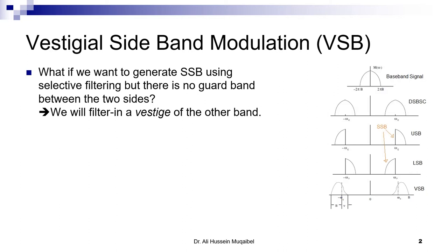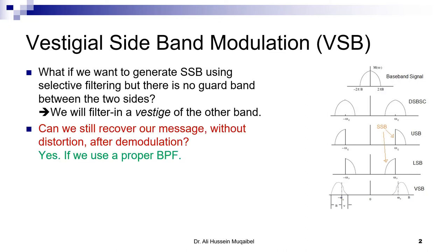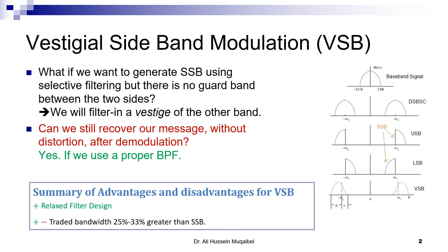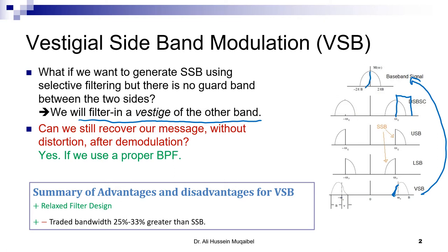Now, what if we want to generate single sideband using selective filtering and we find out that there is no guard band between the upper and lower part? If there is no guard band, when you use a filter you will end up with a vestige, because your filter is not very sharp and you will have an extra part. This extra part is called the vestige, so we filter in a vestige of the other band. The question is: can we recover this signal? The answer is luckily yes — even if you don't have a very sharp filter and you end up having a vestige, you can go back using a proper band pass filter.